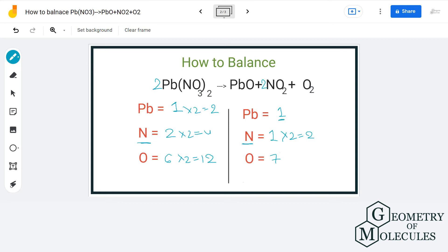On the product side, we only have one lead atom. So to balance it, we will multiply PbO by two. Let us multiply NO2 by four to balance the nitrogen atoms on both sides of the equation.